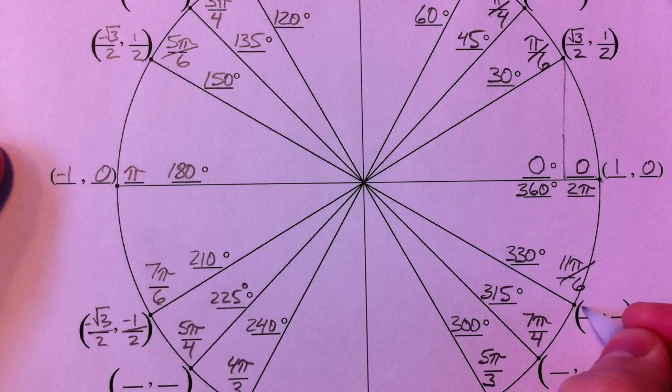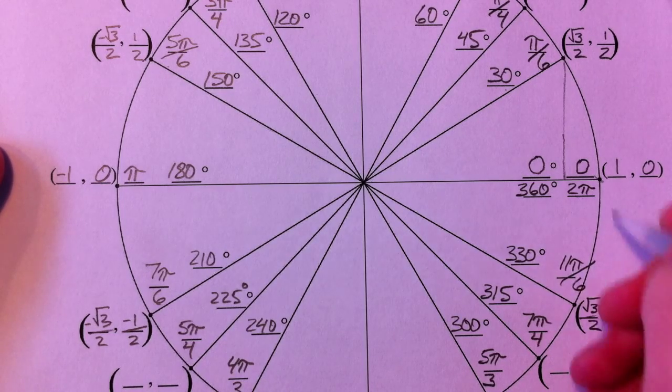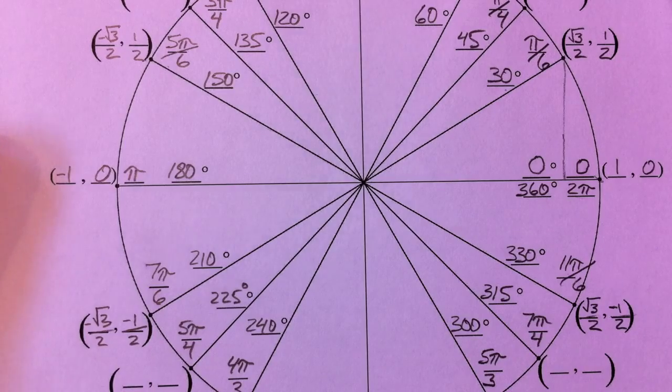And so you've got square root of 3 here, and 2, and 1 half, but this one's a negative 1 half because we've gone down. All of these are just reflections of each other.